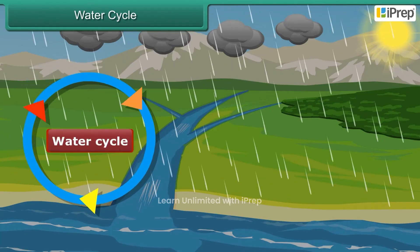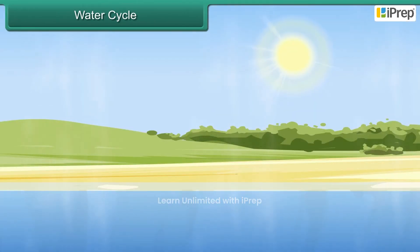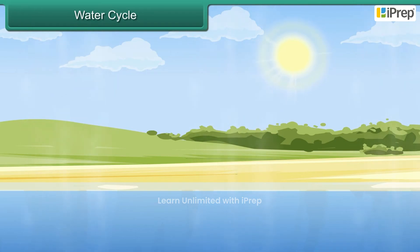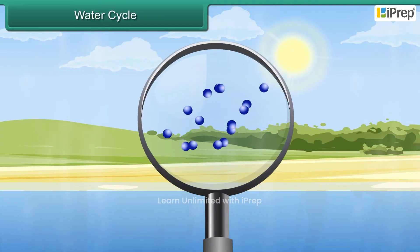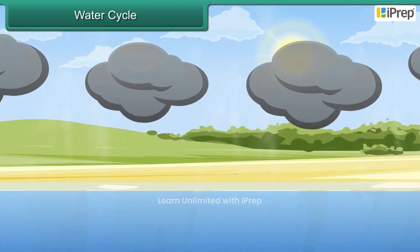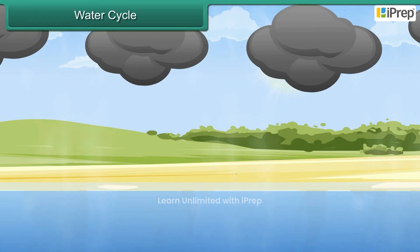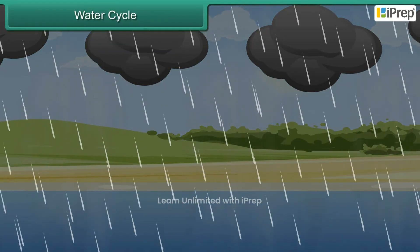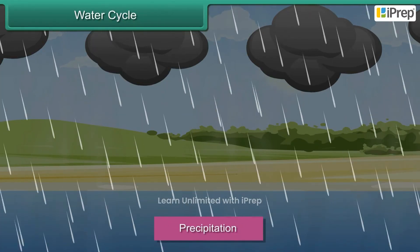Water from the seas and oceans is heated by the sun's rays, which causes it to change into a gas and rise into the air — this is called evaporation. Once high up in the sky, the gas begins to cool and turns back into a liquid — this process is called condensation. The water droplets form clouds, which become heavy and fall from the sky in the form of rain, called precipitation. This cycle never stops.